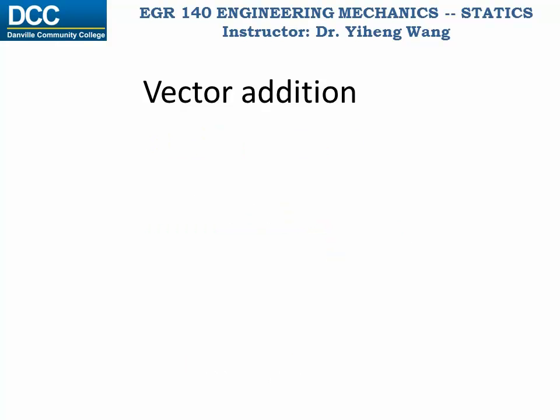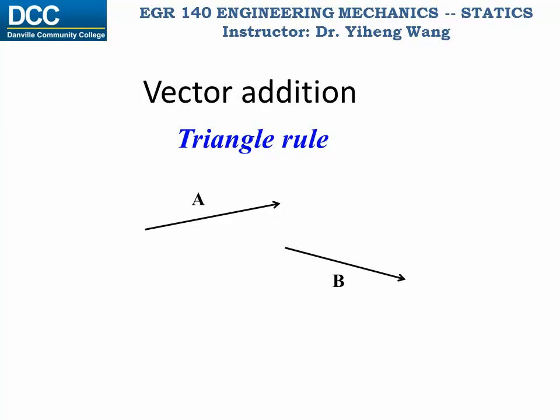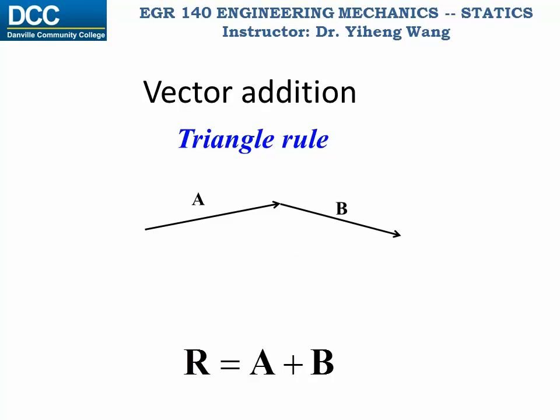As a simplification to the parallelogram law, we can use the triangle rule instead. Again we start with the two vectors a and b and we want to find their sum r. Instead of joining the tails of the two vectors, we now join them in a head-to-tail fashion. The head of vector a is connected with the tail of vector b. Then, the resultant vector r can simply be represented by an arrow that starts from the tail of vector a to the head of vector b.